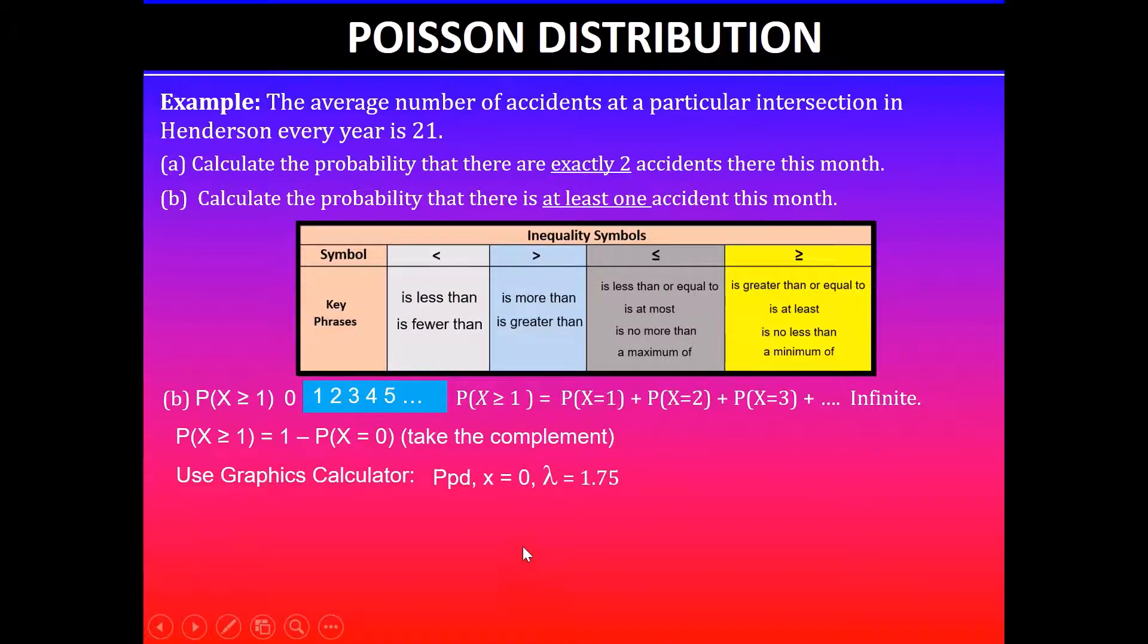Using the graphics calculator we'll select ppd, X value is exactly zero, and the lambda value of 1.75, which is 21 divided by 12 because the size of the interval now is a month not year.